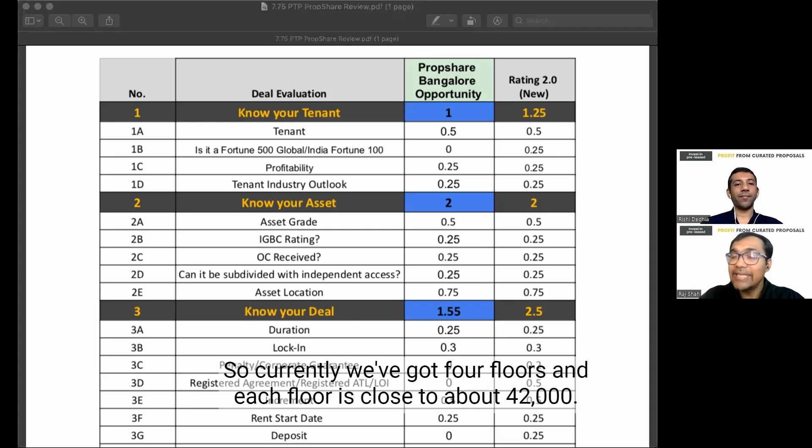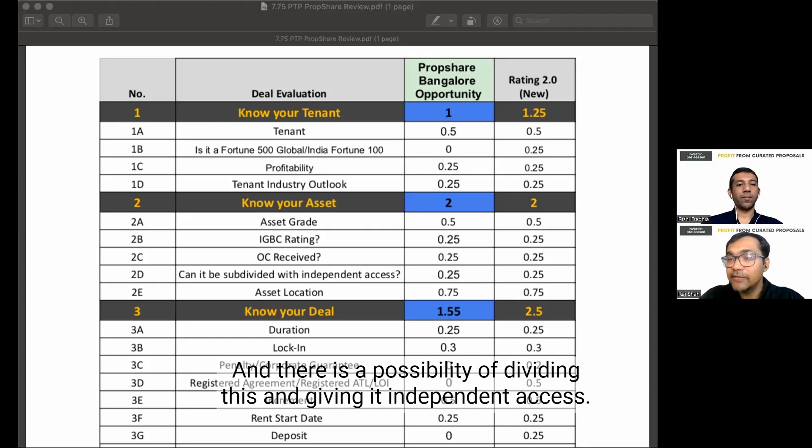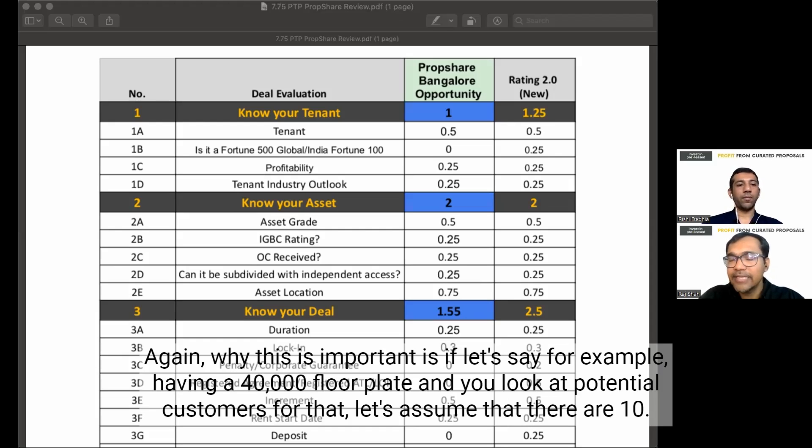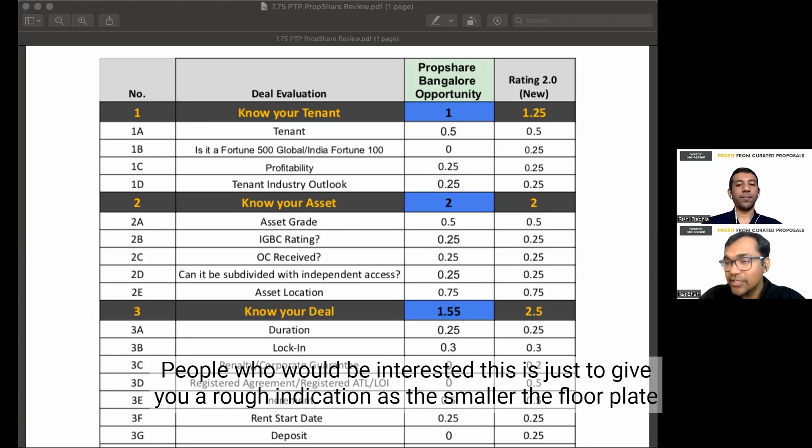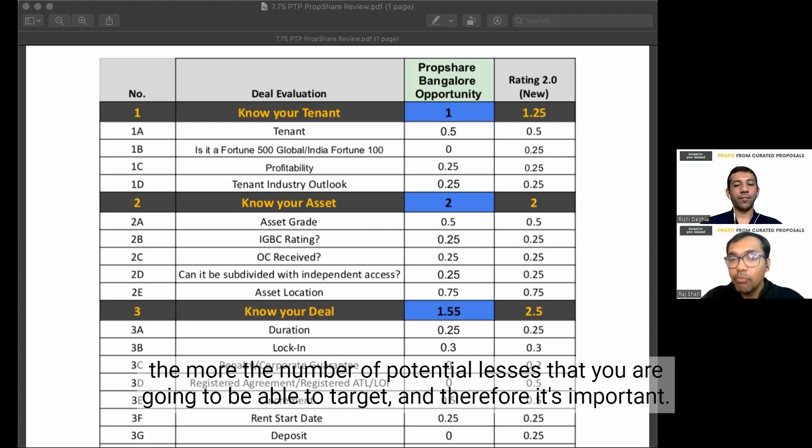I'll also go ahead and talk about whether it can be subdivided with independent access. So currently, we've got four floors, and each floor is close to about 42,000. And there is a possibility of dividing this and giving it independent access. Again, why this is important is if, let's say, for example, having a 40,000 floor plate and you look at potential customers for that, let's assume that there are 10. If you were to divide it and make it 20,000, you are likely to have more than 20, 25 people who would be interested. This is just to give you a rough indication as the smaller the floor plate, the more the number of potential lessees that you are going to be able to target. And therefore, it's important.